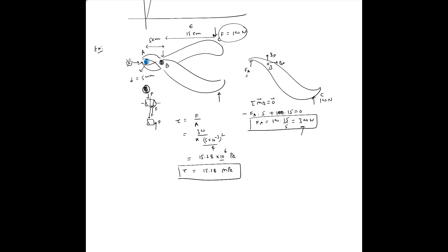If asked for the shear stress at pin B, you would take moments about point A to find the force at B. From force equilibrium, Bx = 0 since there are no horizontal forces. Once By is determined, the shear stress at pin B is simply By divided by the cross-sectional area of the pin at B — applying the same shear stress formula.